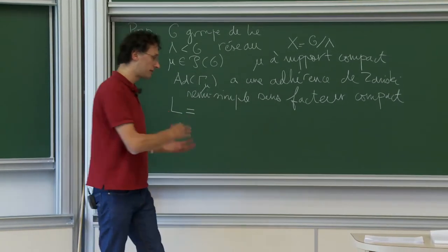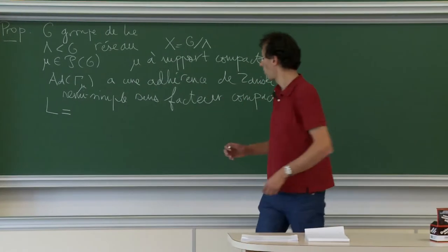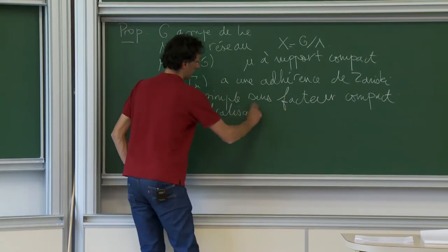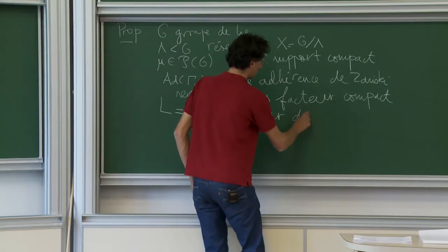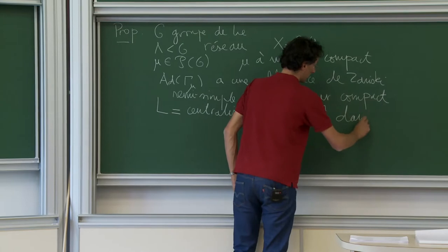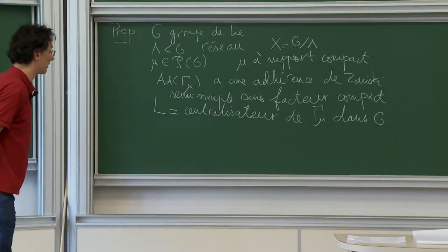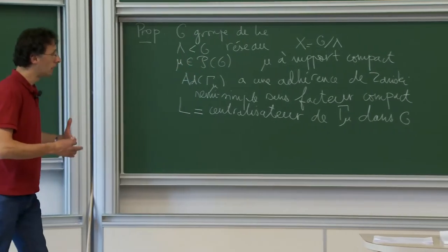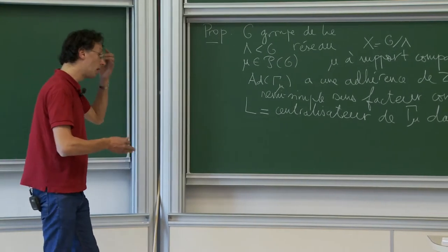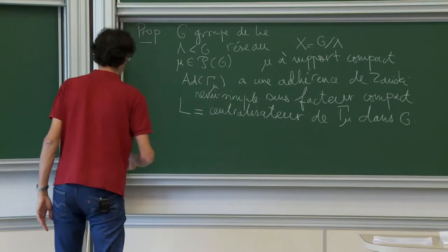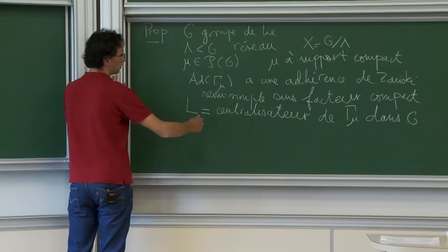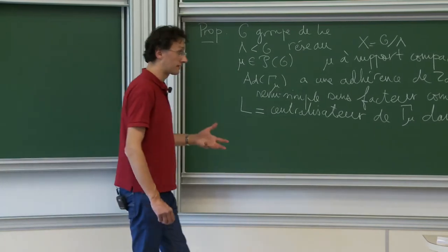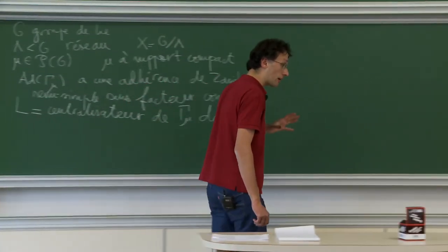As we saw last time, an important role is played by the centralizer — which I always denote L — the centralizer of Γ_μ in G. It is a closed subgroup of G. The presence of the centralizer in phenomena of divergence adds some complexity, but we get through it. For launching the derivative, there are measures that do not charge the orbit of the centralizer. So I suppose that ν(Lx) = 0 for all x in G/Lambda.